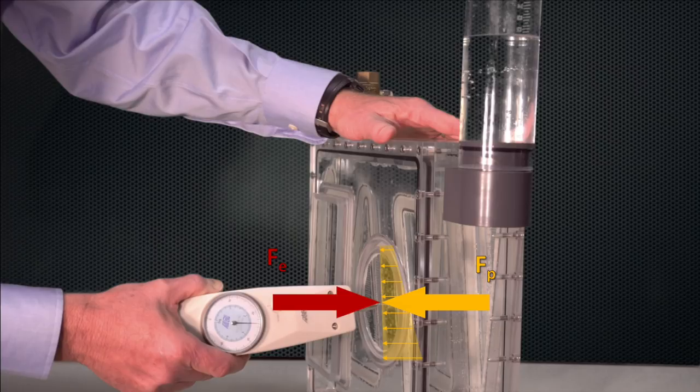As a result, whenever a panel is flush with the box, the applied external force, Fe, will exactly match the magnitude and location of the equivalent pressure force, Fp.